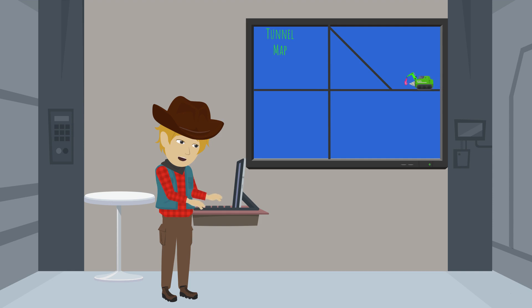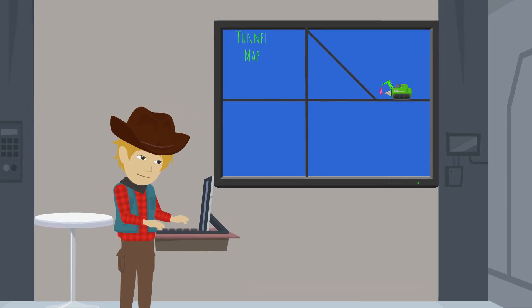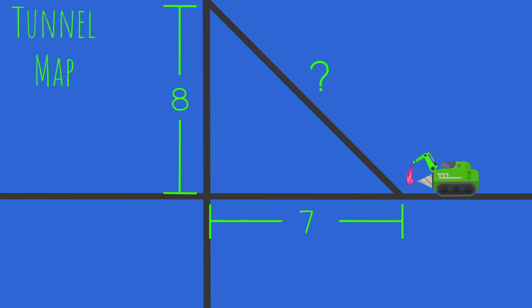According to the map, the tunnels form a right triangle. And since we are dealing with a right triangle, and we have the length of two of the sides, we can use the Pythagorean theorem to figure out the distance of the missing side.